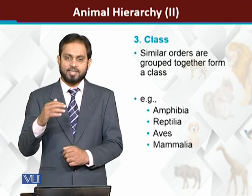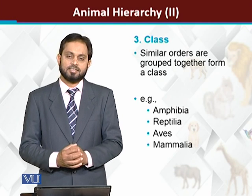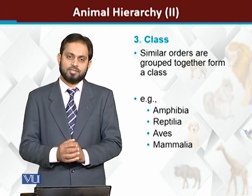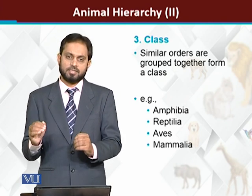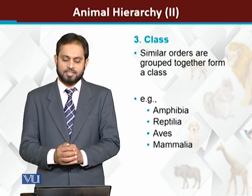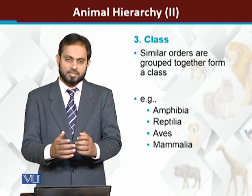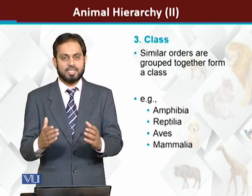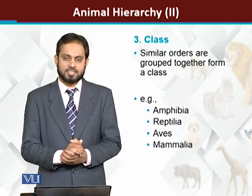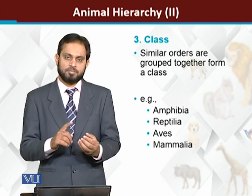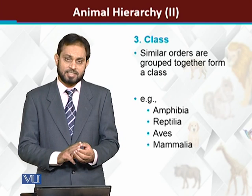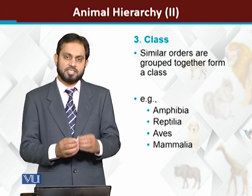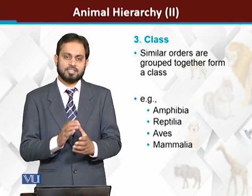The higher level of hierarchy is a class. Different orders are grouped together to form a class. There are many related characters within an order. Humans and other mammals belong to the class Mammalia. Amphibians — frogs, toads, salamanders — belong to the class Amphibia. Snakes and lizards belong to the class Reptilia.